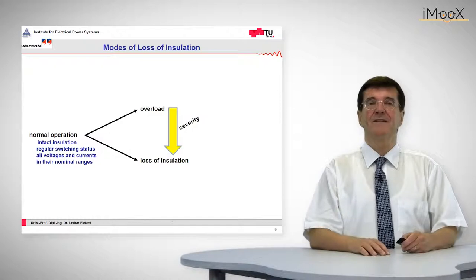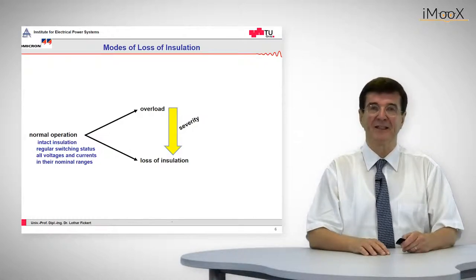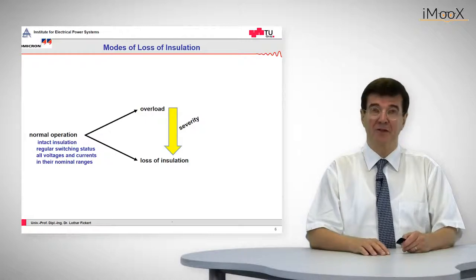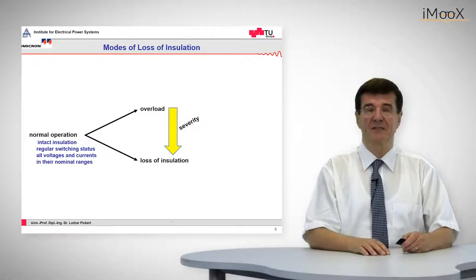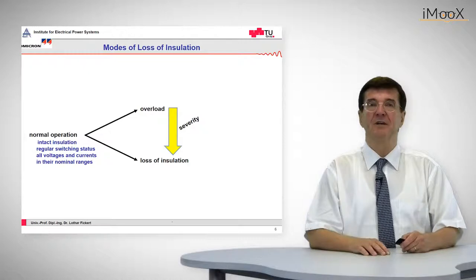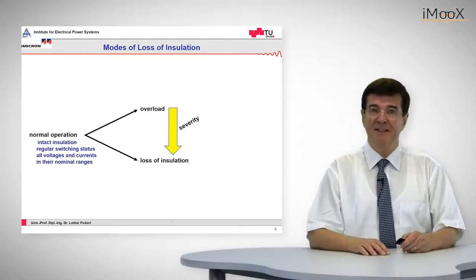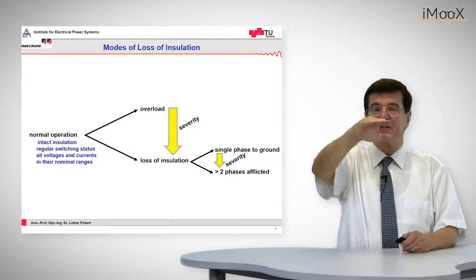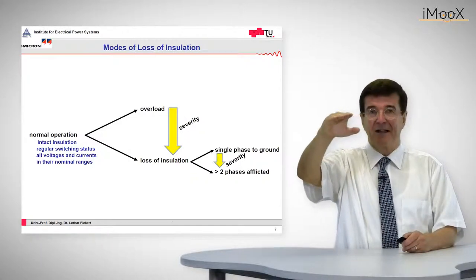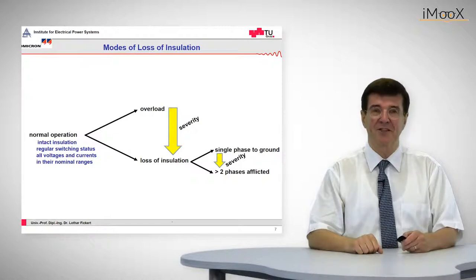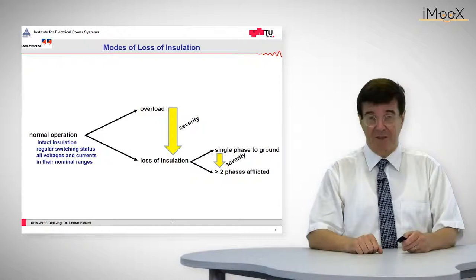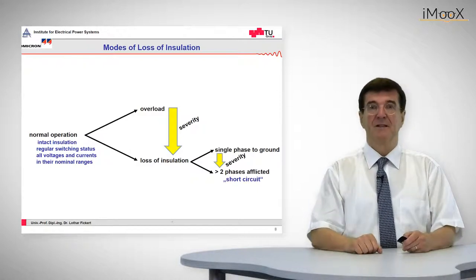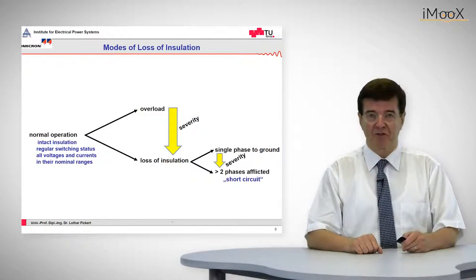So when these current-wise conditions are violated, then we speak either of overload or, in the case of loss of insulation, about short circuits. Overload means that the current goes slightly above the nominal current level and then is reduced. Whereas in the loss of insulation we have either a single-phase to ground fault or a multiple-phase to ground fault, which are also called short circuits.